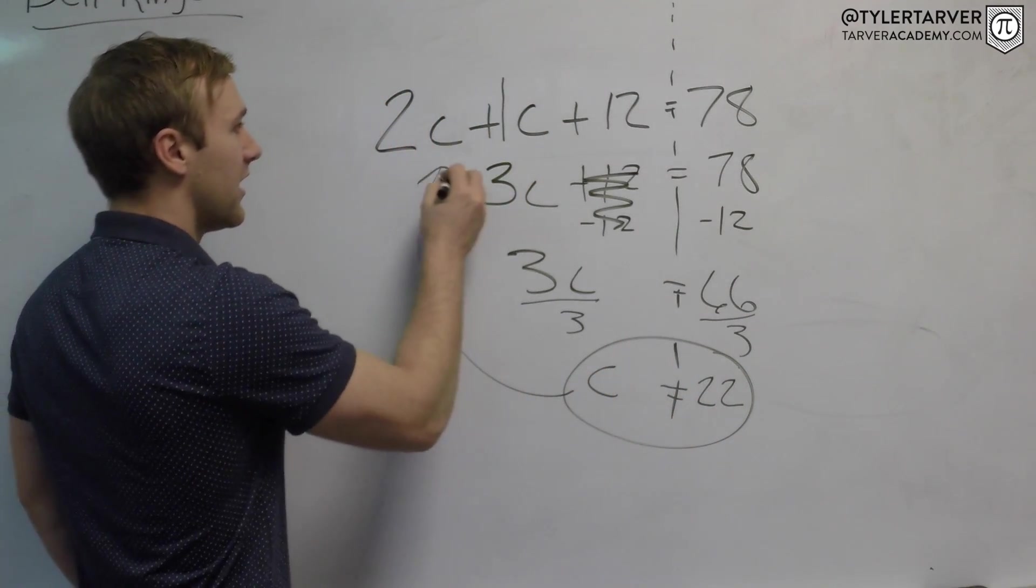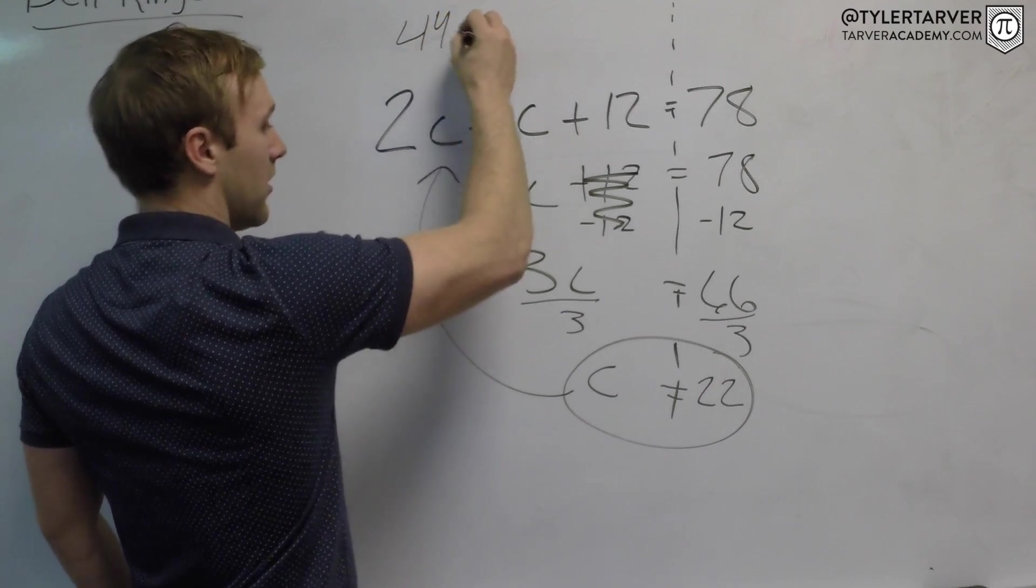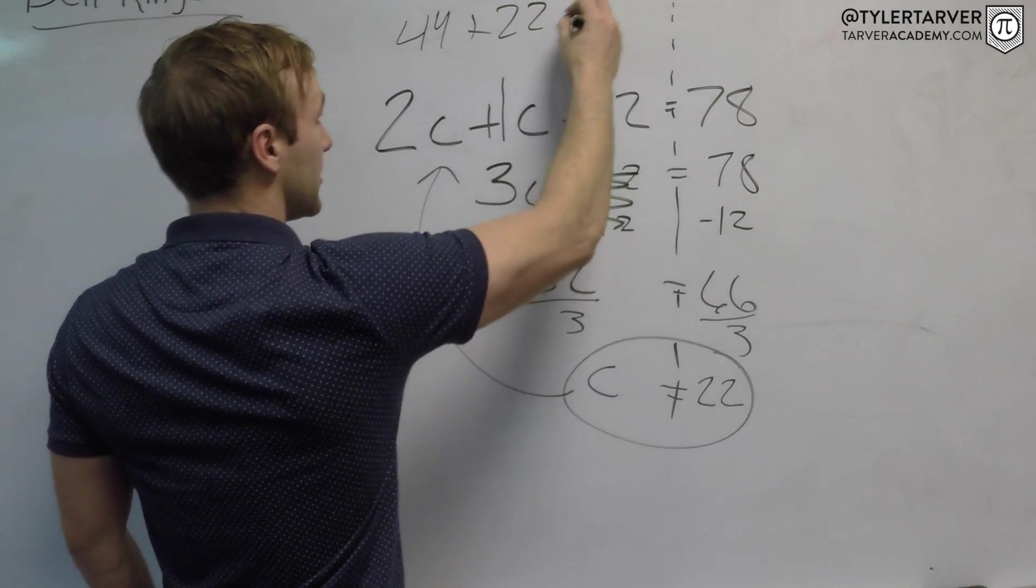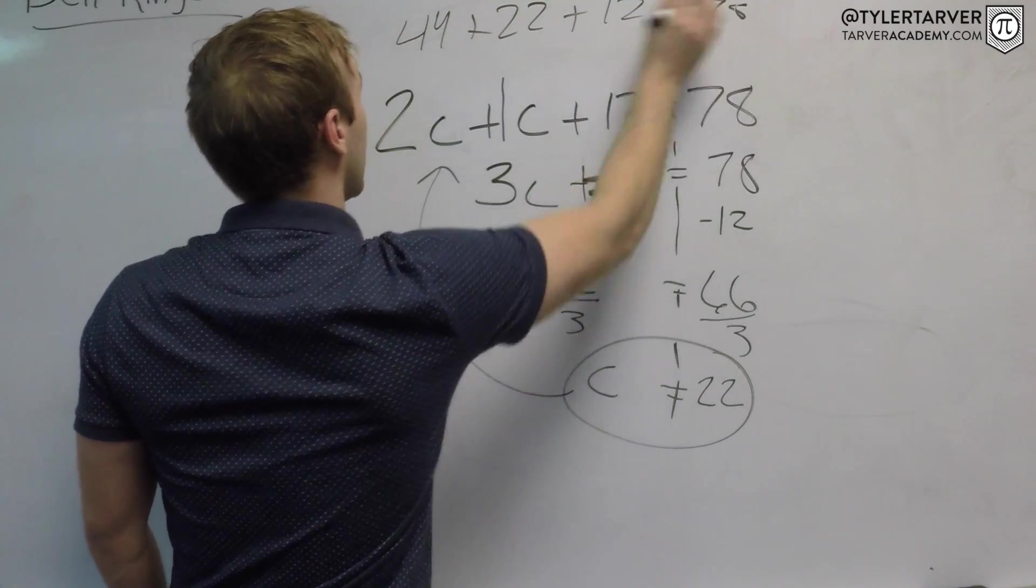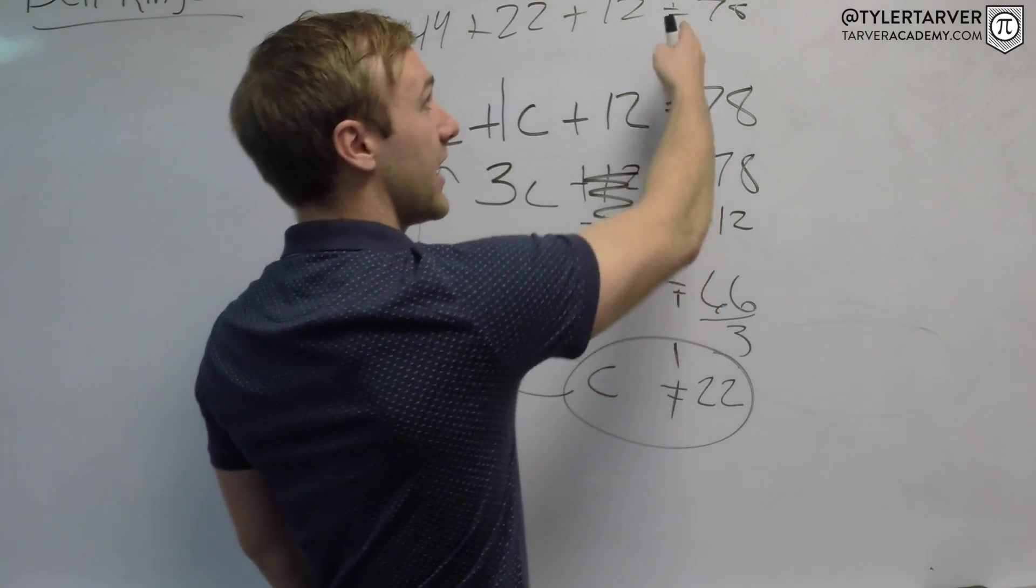Now you can always plug that back in and figure out if you were correct. Let's try it: 2 times 22 is 44, plus 22 plus 12 equals 78. 44 plus 22 is 66, plus 12 is 78 equals 78. Therefore it is correct.